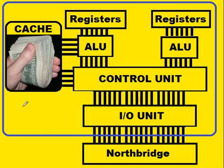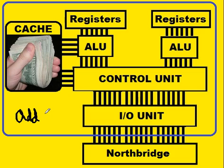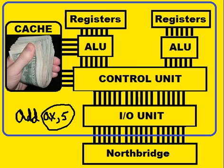For example, an instruction may come by that says add to the AX register, value 5. These two are called operands. These two operands get fed into the ALU over here, the Arithmetic Logic Unit.